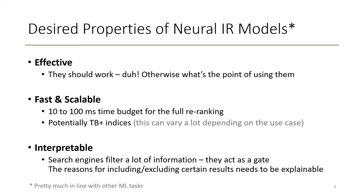The desired properties of neural IR models are pretty much in line with any other machine learning task. They should be effective — if they don't work, we just wouldn't use them. They need to be fast and scalable. Something that differentiates information retrieval more from other machine learning tasks is that if you do online re-ranking — meaning you re-rank when the user searches for something — you basically have a time budget of 10 to 100 milliseconds for the full query, and potentially your indices are terabytes large.